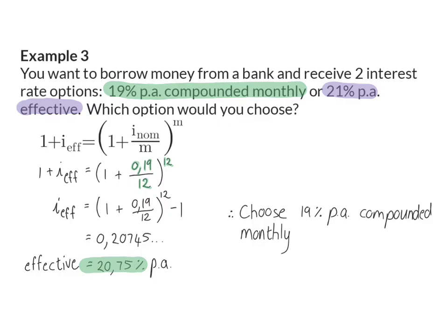If these two options were given for an investment, I would of course choose the 21% effective, because then I would want to receive as much interest as possible. The skill of converting between nominal and effective interest rates is clearly an important skill to have when managing your own finances.